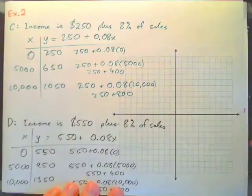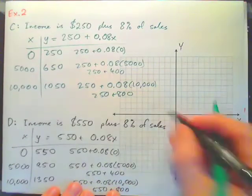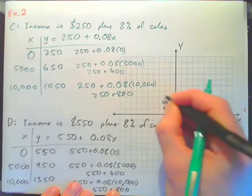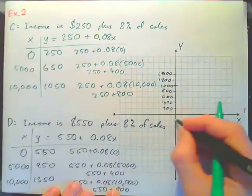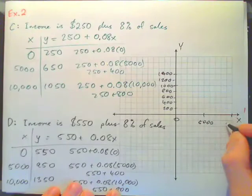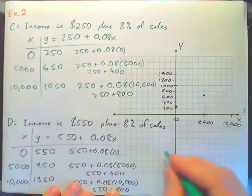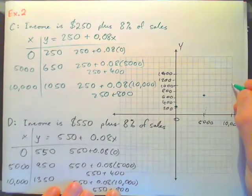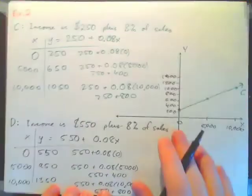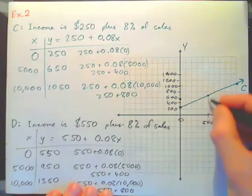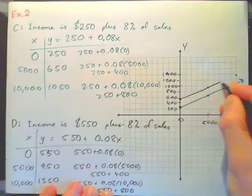So if we plot these points, we could say 0, so if this X axis is $5,000, $10,000. And this one would say $0, $200, $400, $600, $800, $1,000, $1,200, and so on, $1,400. So $0, $250 would be here, $5,000, $650 here, $10,000, $1,050 is here. So to plot as C, package C looks like that. And package D: $0, $550, $5,000, $950, and $10,000, $1,350. Package D looks like that.